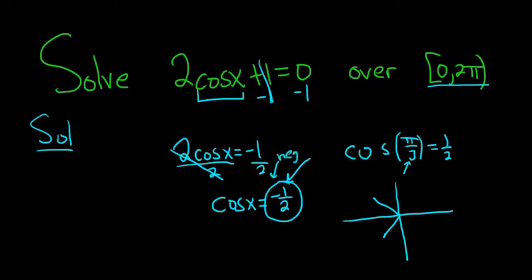If this was a positive 1 half, then the angles would have to be here and here. So the angle that's a multiple of pi over 3 here is 2 pi over 3. And the angle we want here is simply 4 pi over 3.